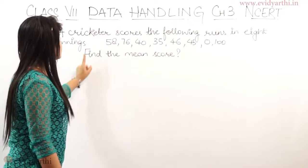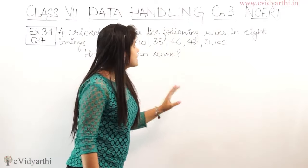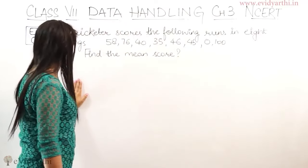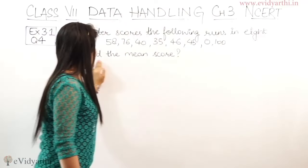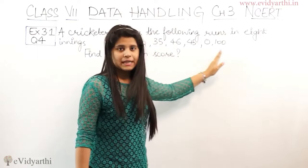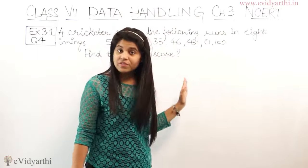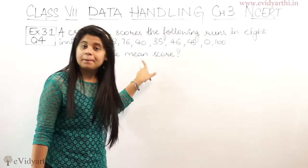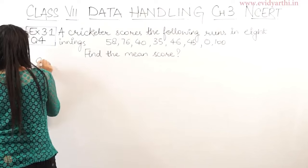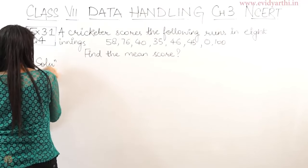In this question, a cricketer scores the following runs in 8 innings. We have to find the mean score. So we will start by writing the formula of mean.